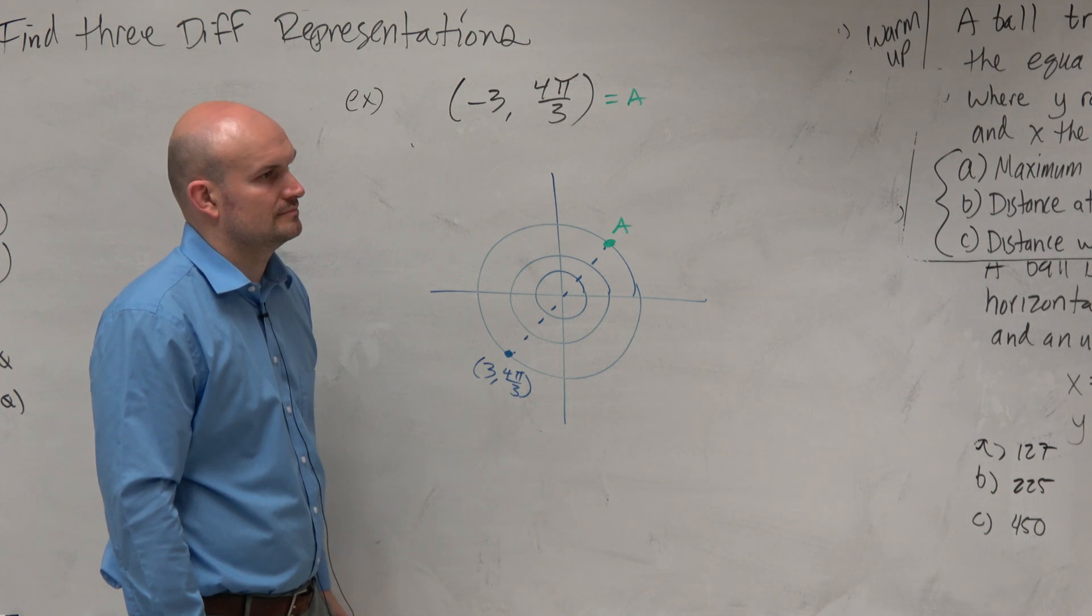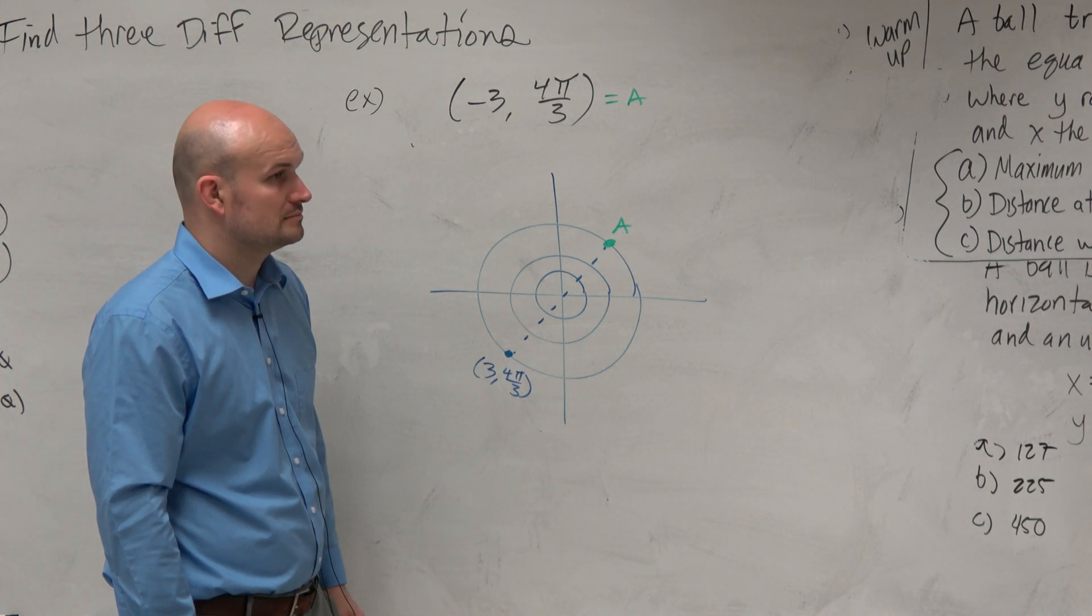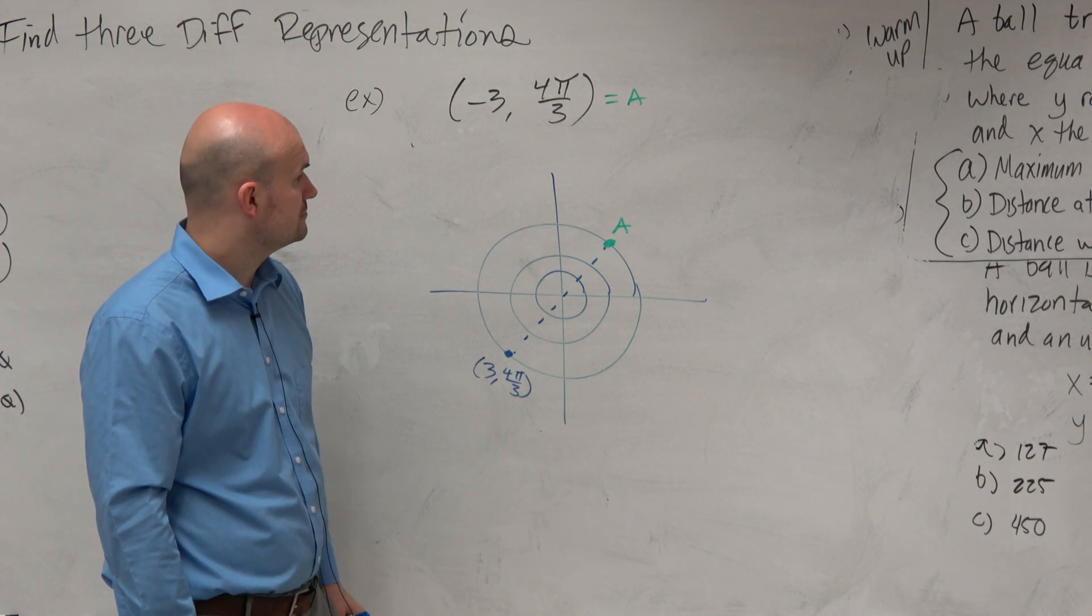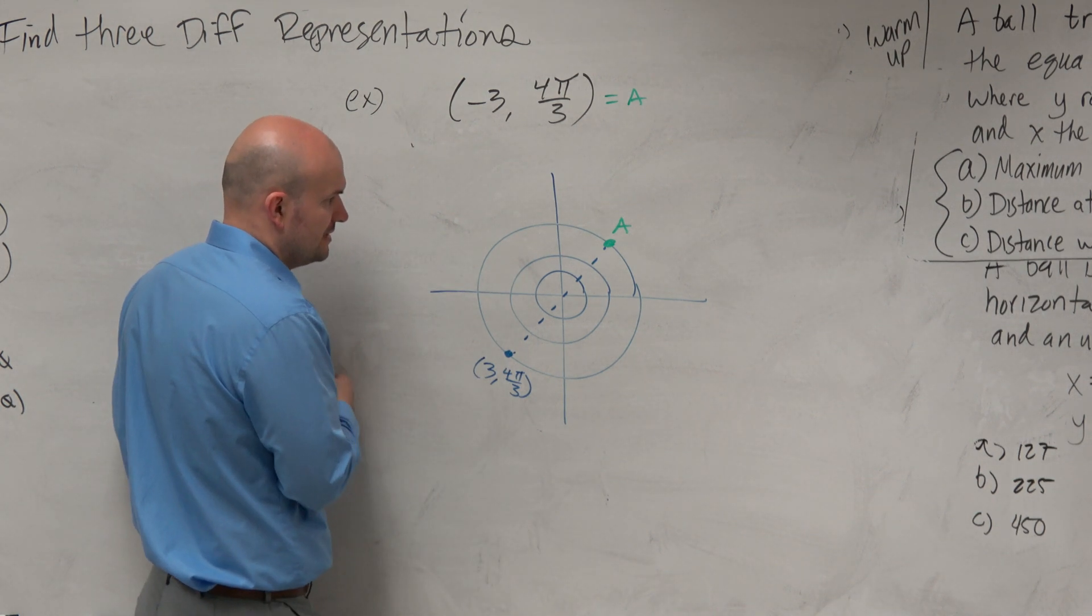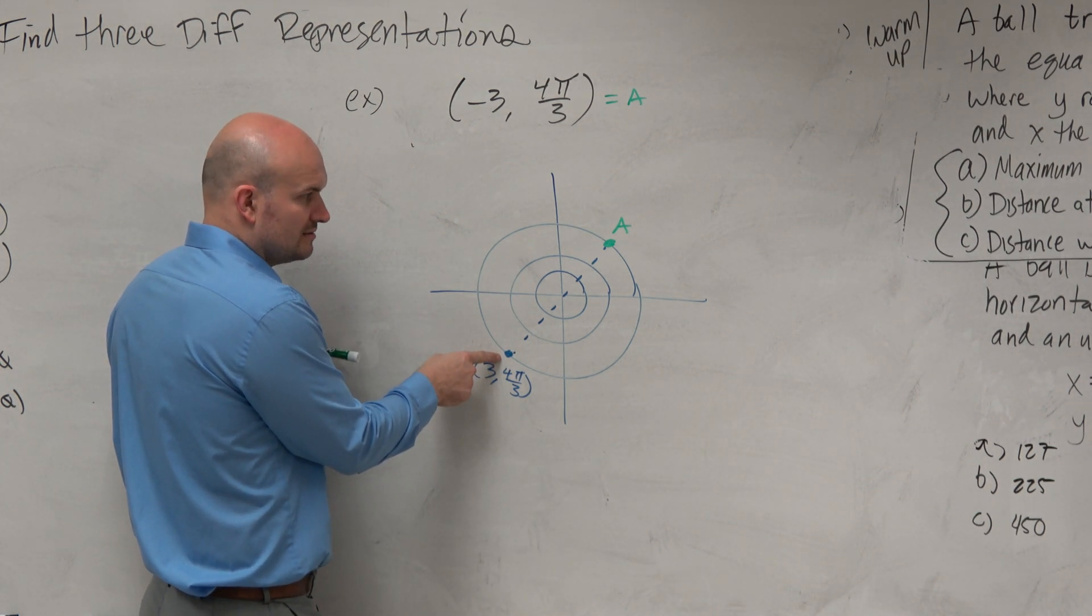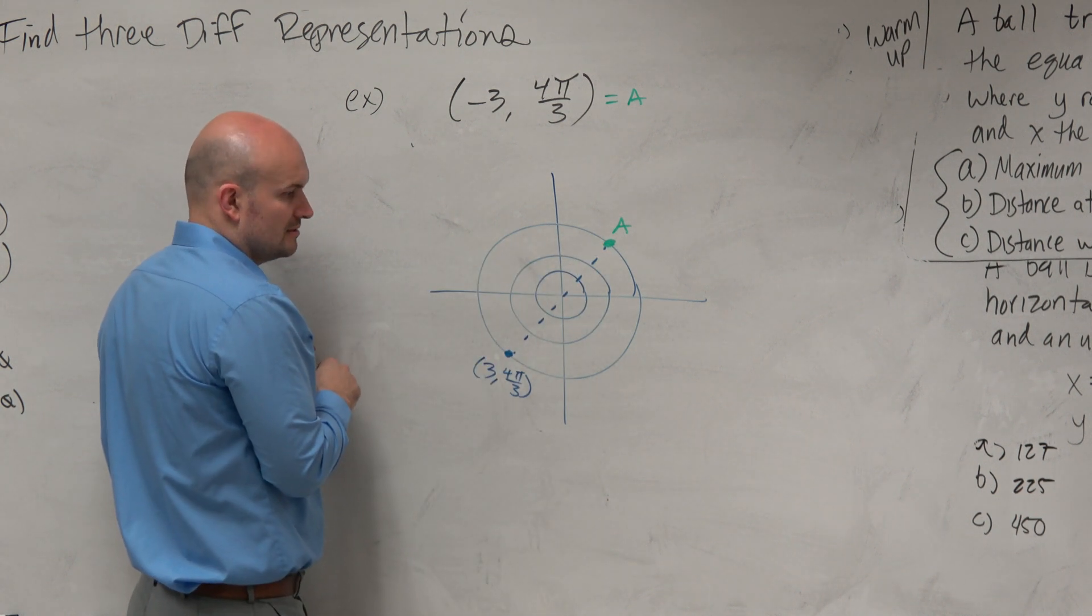So like, you couldn't say that positive 3, 4π over 3 is an answer? No, because positive 3, 4π over 3 is going to take you to this point right here. That's not the same as that point, right?